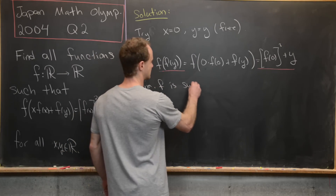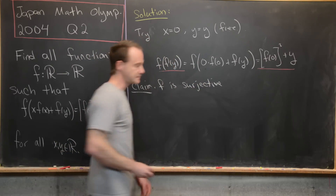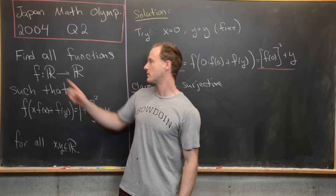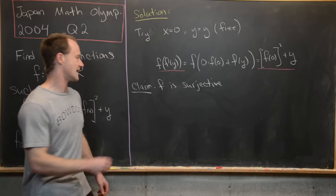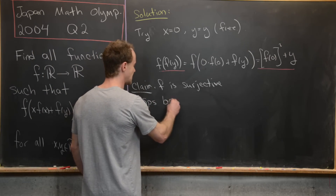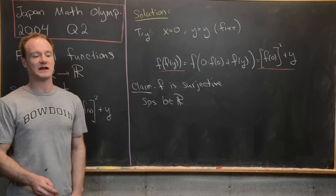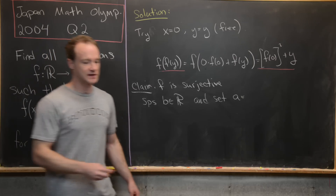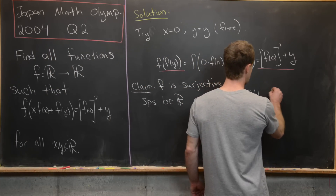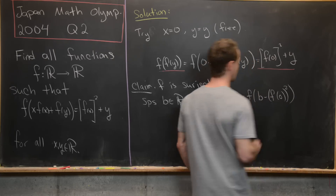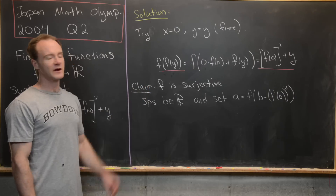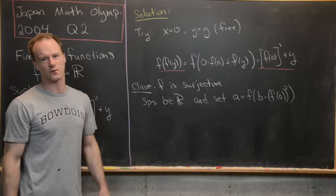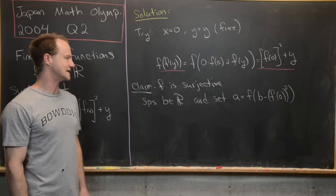Claim: f is surjective. The idea is to take an arbitrary member b of the codomain and find a member of the domain that maps onto it. Suppose b is a real number; we set a = f(b − f(0)²). That choice for a comes from inverting the equation we derived — you might work through that as a nice exercise.